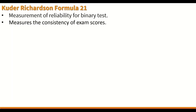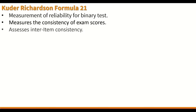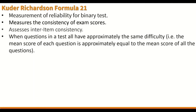The KR21 measures the consistency of exam scores. The formula assesses the inter-item consistency, and the Kuder-Richardson Formula 21 is used instead of the KR20 when the questions in a test all have approximately the same difficulty — i.e., the mean score of each question is approximately equal to the mean score of all the questions.